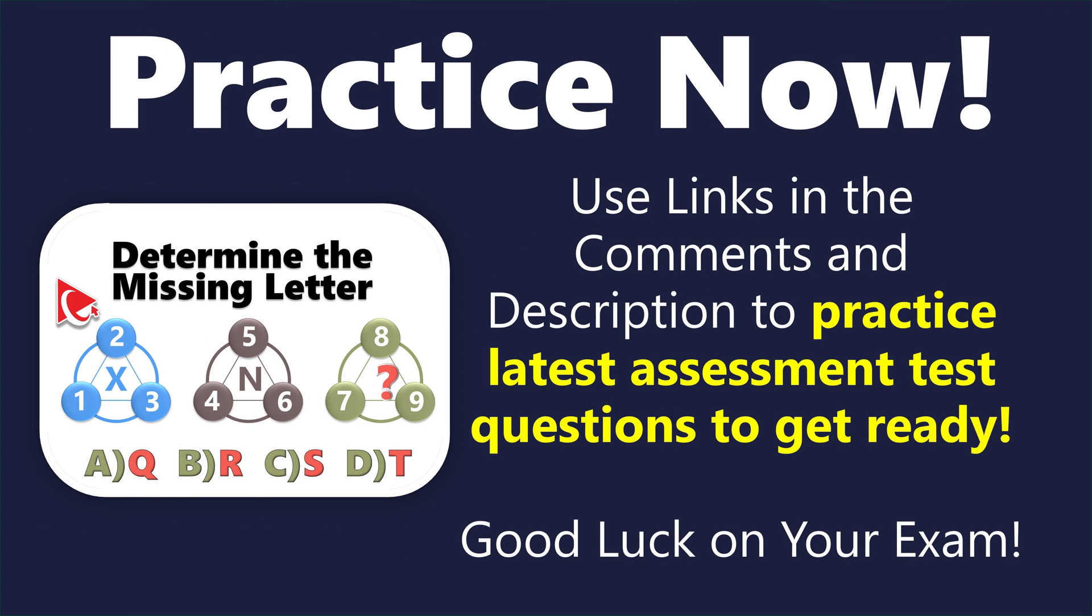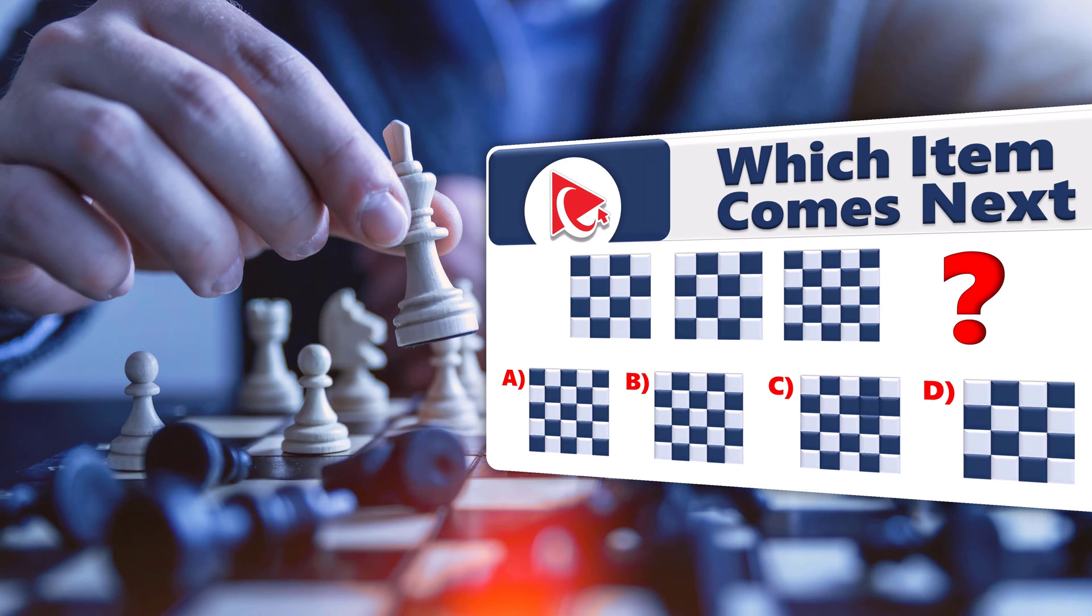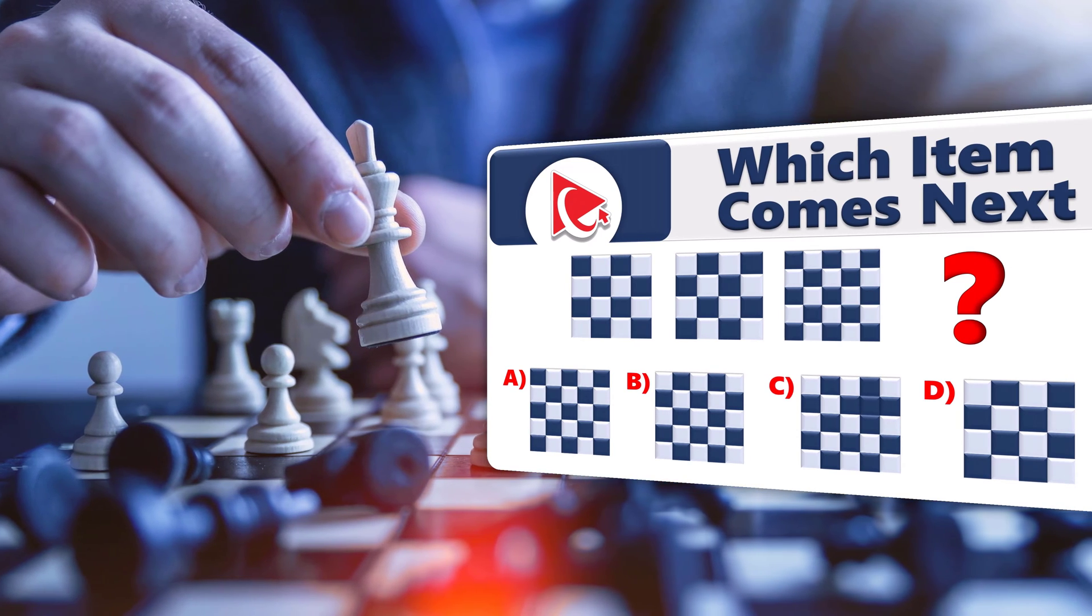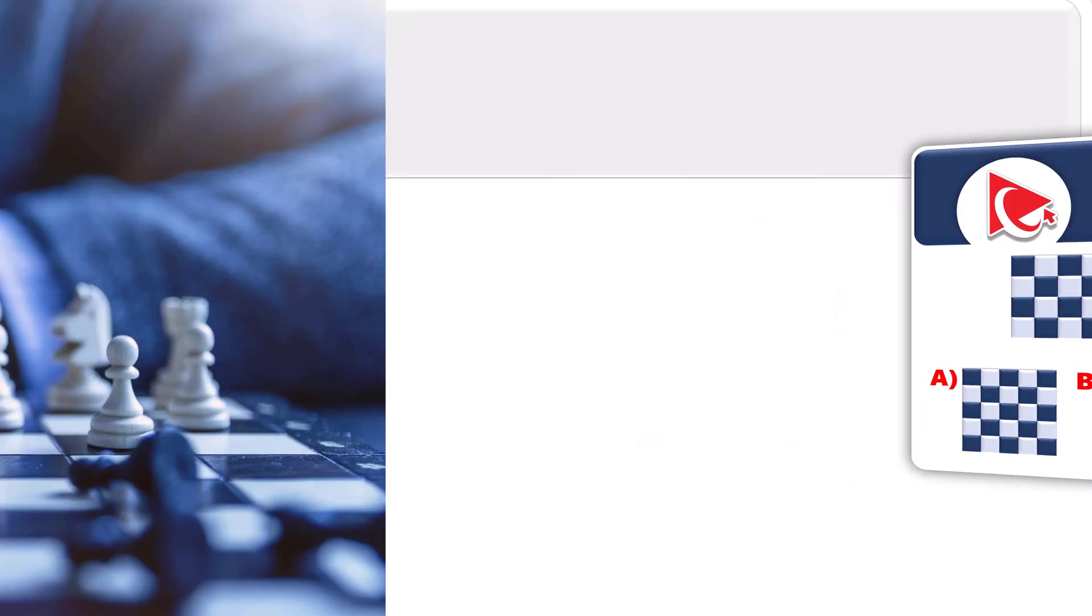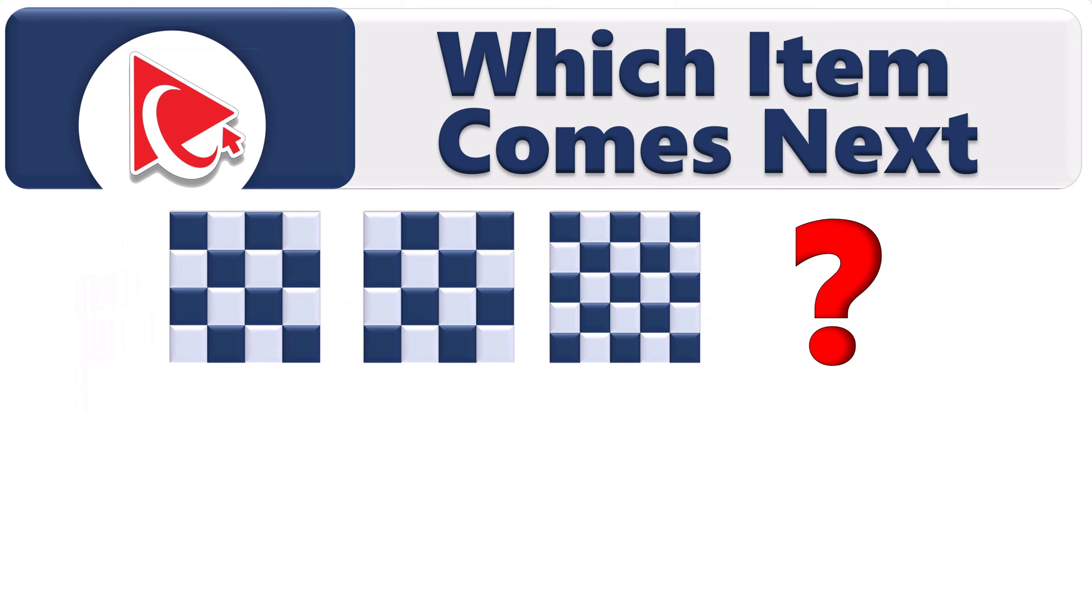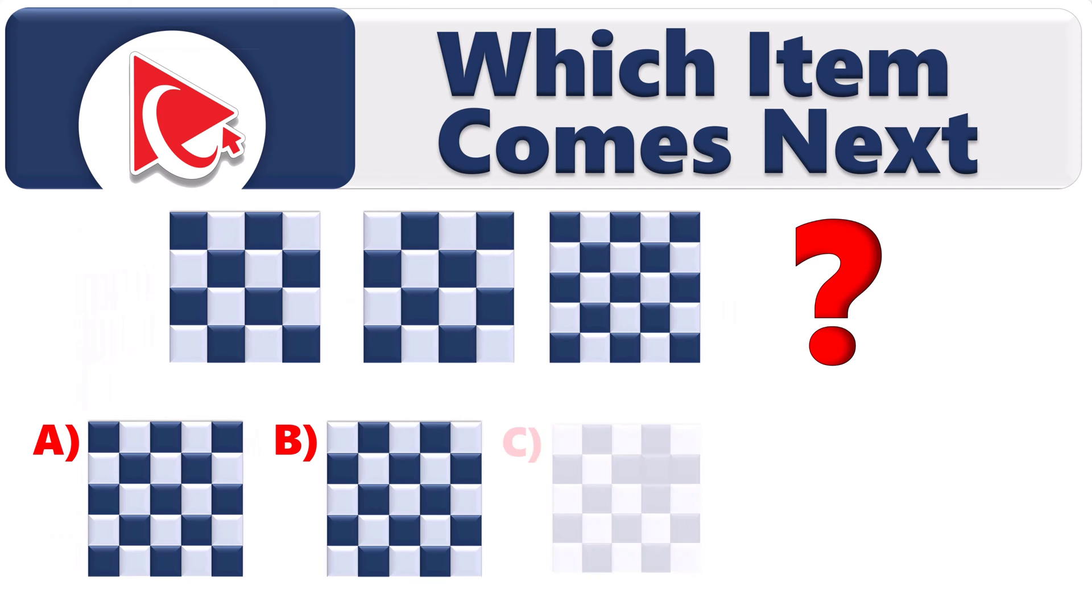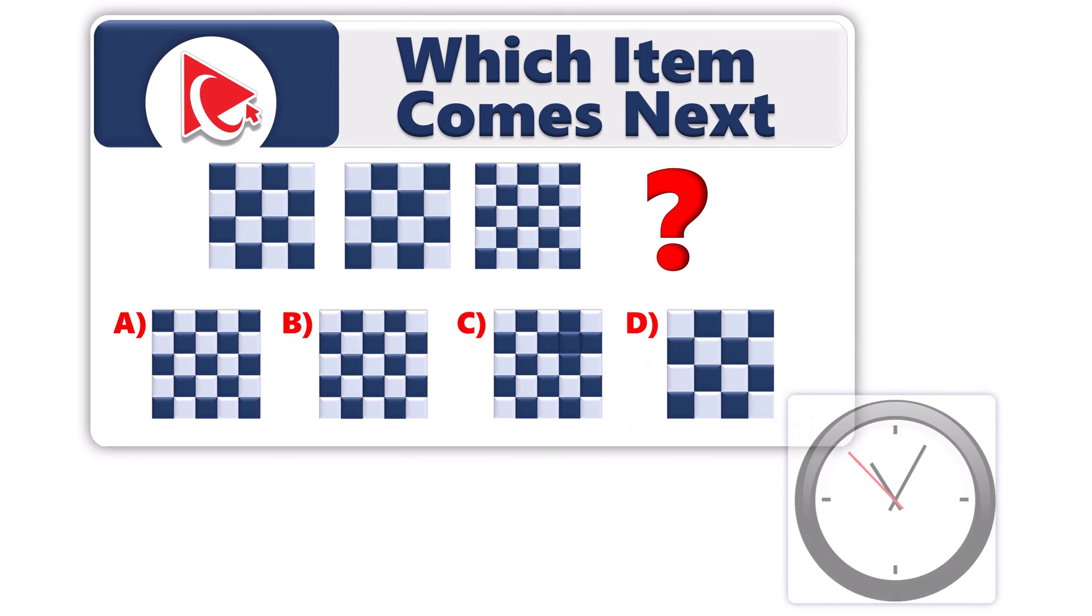Let's dive into an amazing cognitive assessment test question that not only enhances your analytical abilities, but also improves your valuable problem-solving skills you can apply to solve real-life problems. You're presented with three squares, and you need to determine which square comes next. The next square should be selected out of four possible choices. Take a close look to see if you can come up with the solution.